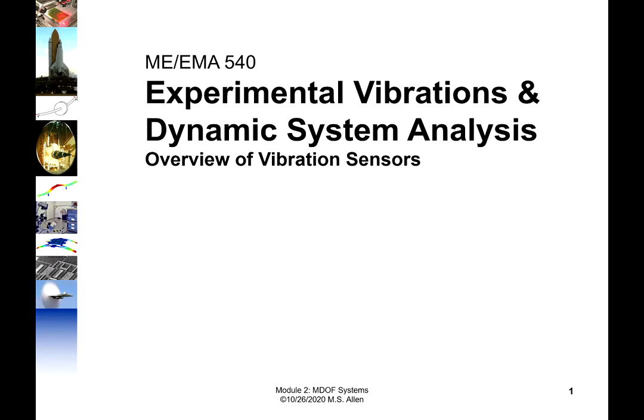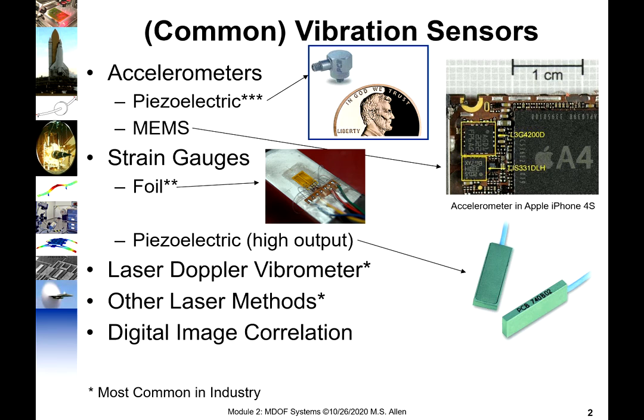Hello again. Today we're going to talk about the common types of vibration sensors and some of the advantages and disadvantages to each. The sensors we're going to talk about today include two different types of accelerometers: the kind used in vibration measuring instruments — piezoelectric accelerometers — as well as the MEMS ones used in a typical smartphone.